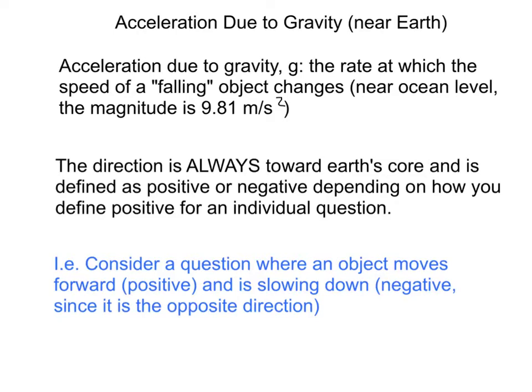Now, in actual reality, that 9.81 is an estimate. There are more decimal places to it. The direction for this is always towards Earth's core. So gravity object acceleration is always towards Earth. We might change its sign to positive or negative, depending on how you define positive for an individual question.